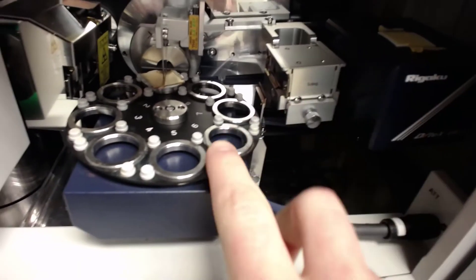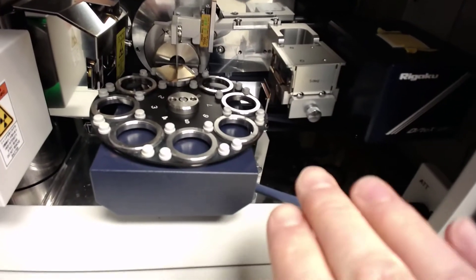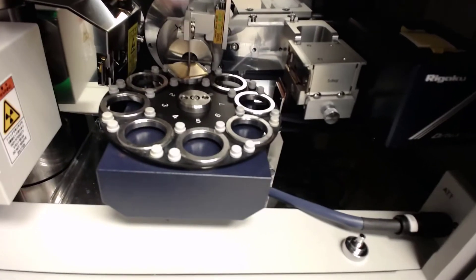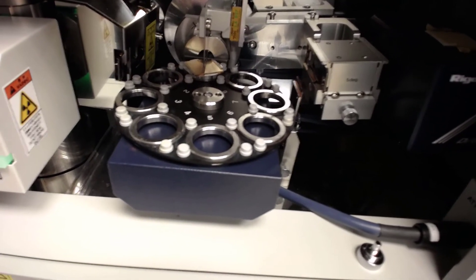And then the detector and the auto sampler will actually tilt and rotate about the center of the sample to change the angle.